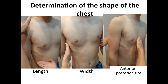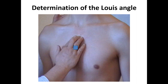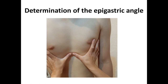Also assess the epigastric angle and width of the intrascapular space. Here is how you detect the length, width, and anteroposterior size of the chest. Next is determination of the severity of the supra- and subclavicular fossae, determination of the Louis angle — near the Louis angle we have the second intercostal space — determination of direction of ribs and width of intercostal space, and determination of the epigastric angle.